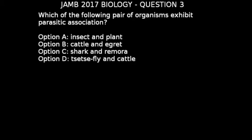Option B, cattle and egrets, is an example of commensalism. Commensalism is an association where one organism benefits while the other is unharmed. In this case, the egrets benefit by feeding on insects that settle on the cattle as it moves across grasslands. The cattle is unharmed by the action of the egrets, so option B is not correct.